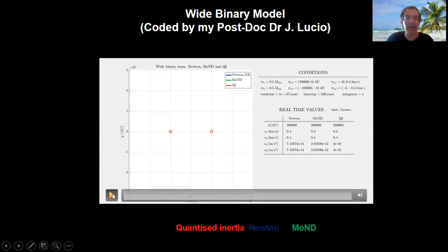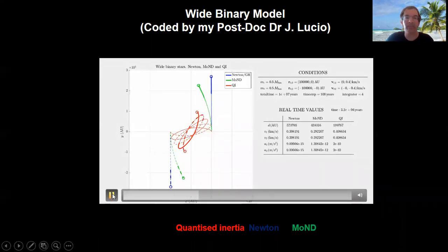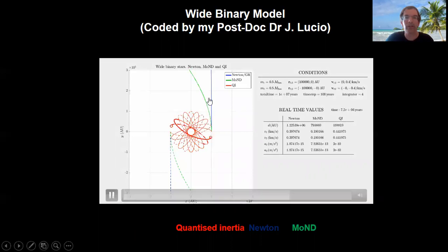And you can see this in the simulation. So as you see, Newton and MOND make the stars separate, and quantized inertia keeps them nicely bound.